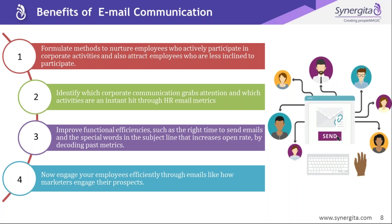Benefit three: improve functional efficiency, such as knowing the right time to send emails and the special words in the subject line that increase open rate, by decoding past metrics. There is a particular time when sending an email gets an immediate response, and HR can identify those optimal timings for effective participation. Benefit four: engage your employees officially through emails, like how marketers engage their prospects. You can engage employees with effective communication from the organization, and get proper responses from employees then and there.